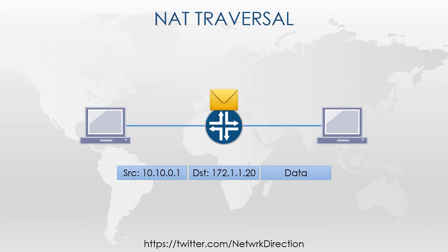When the packet passes through a router configured with NAT, the source IP address in the IP header is changed. Notice, though, that the IP in the payload doesn't change. When the packet arrives, the receiving application sees that the IP in the header is different to the payload, which causes problems for this particular application.